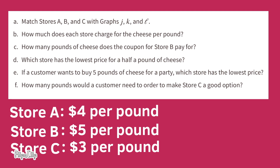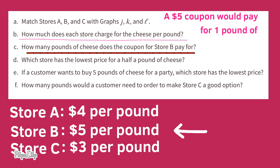How many pounds of cheese does the coupon for Store B pay for? For Store B, a five dollar coupon would pay for one pound of cheese, because at Store B a pound of cheese costs five dollars — the same amount as the coupon.